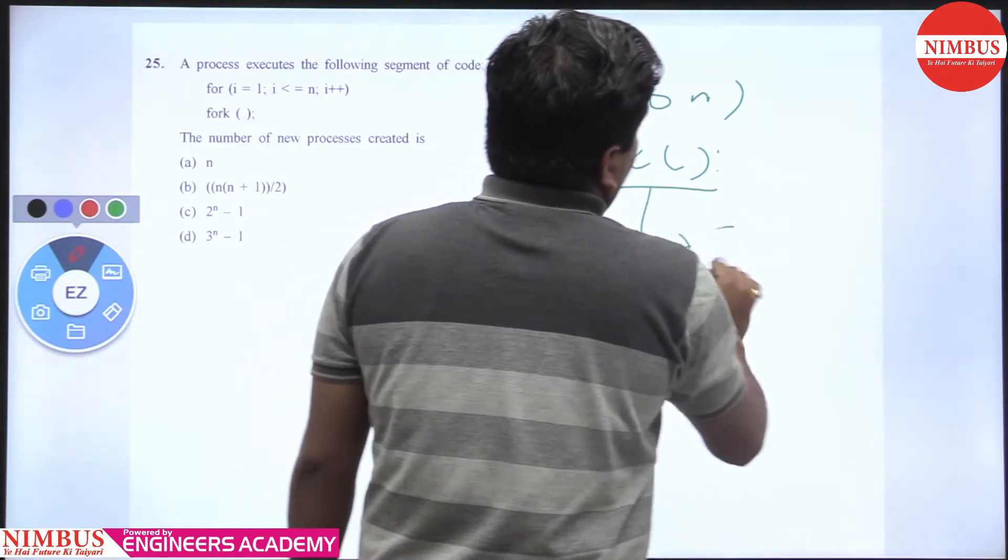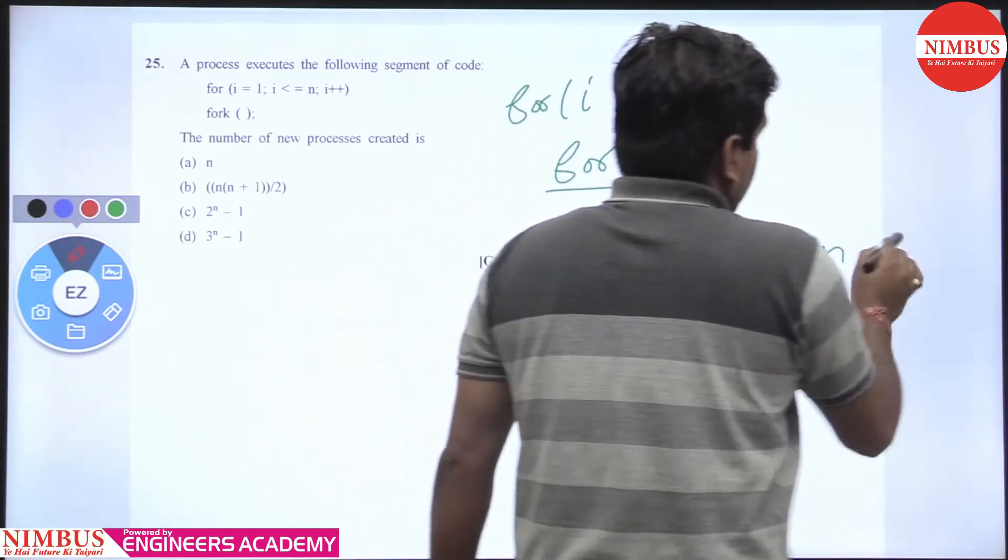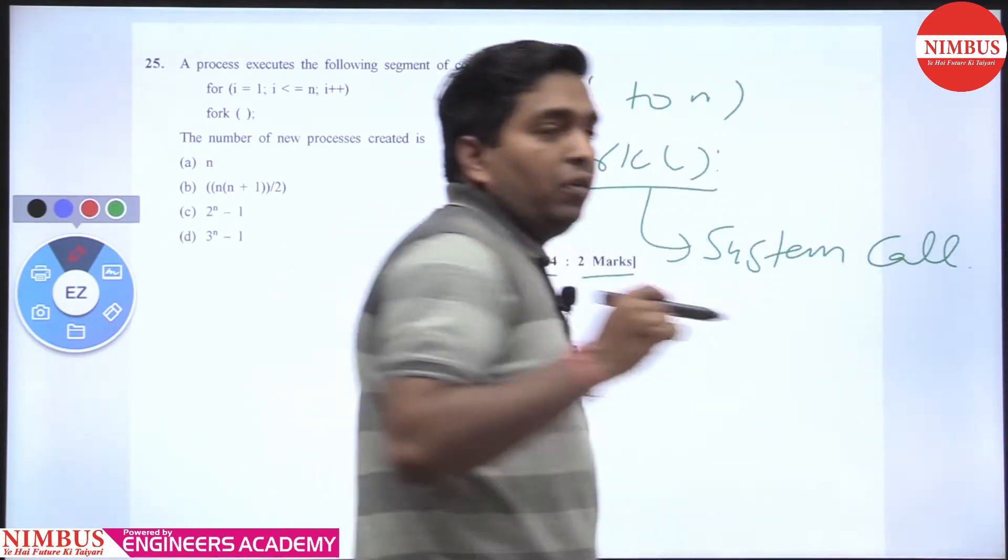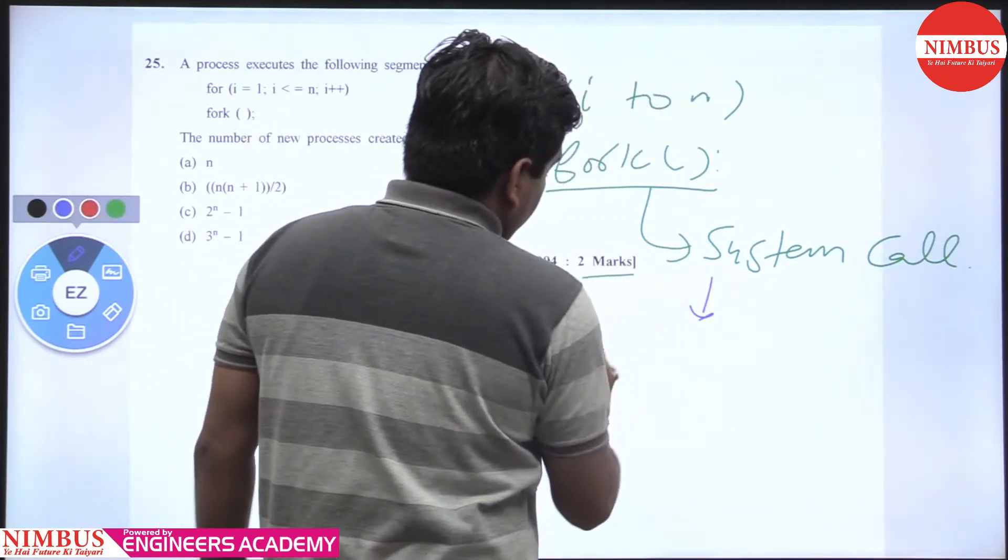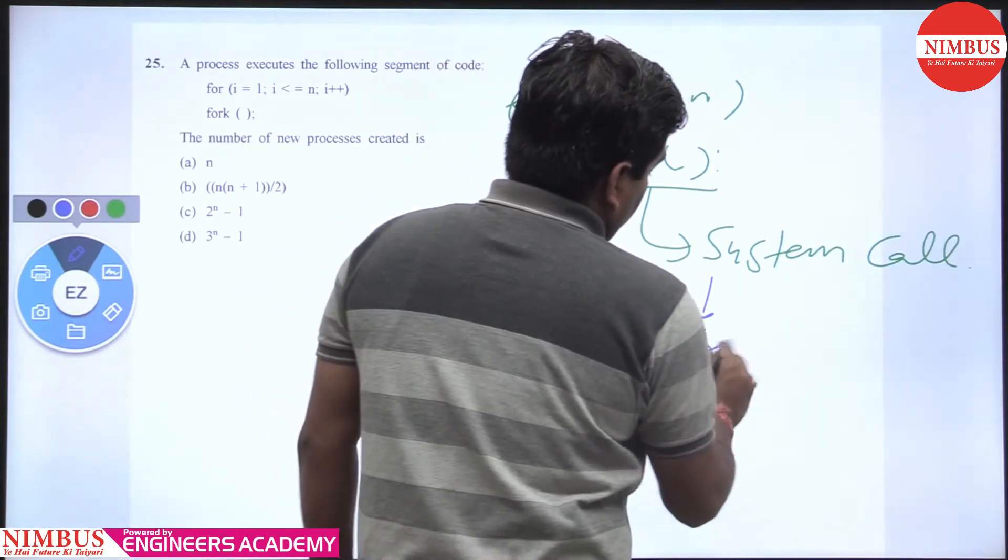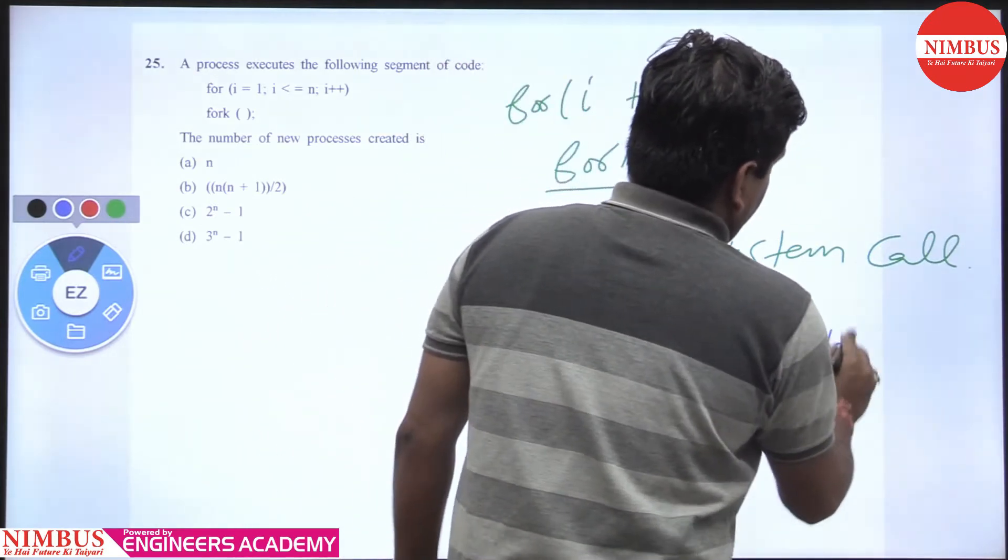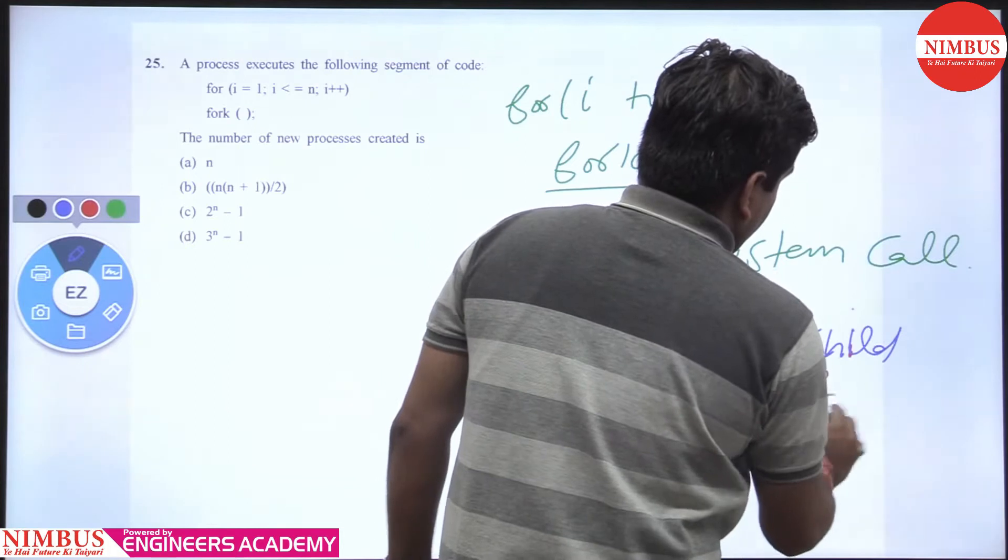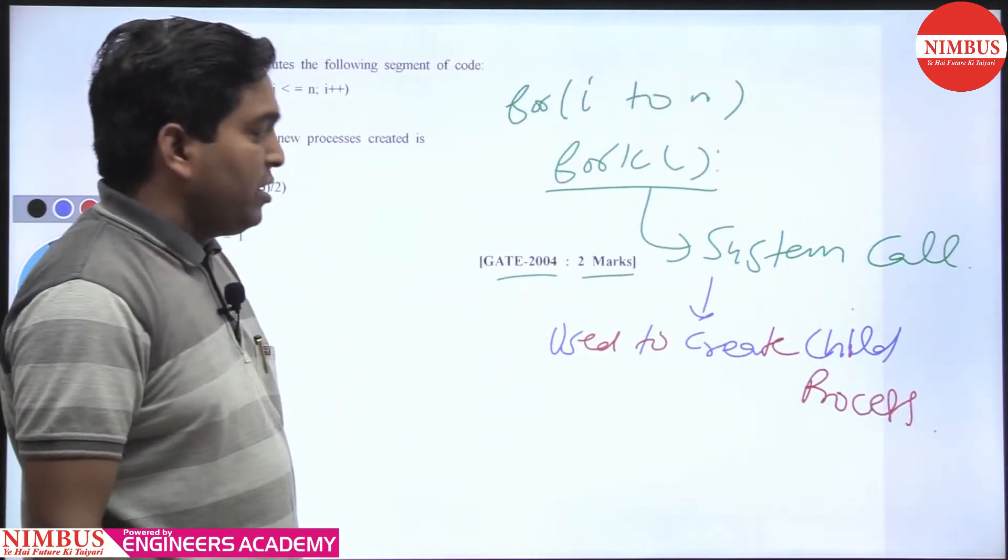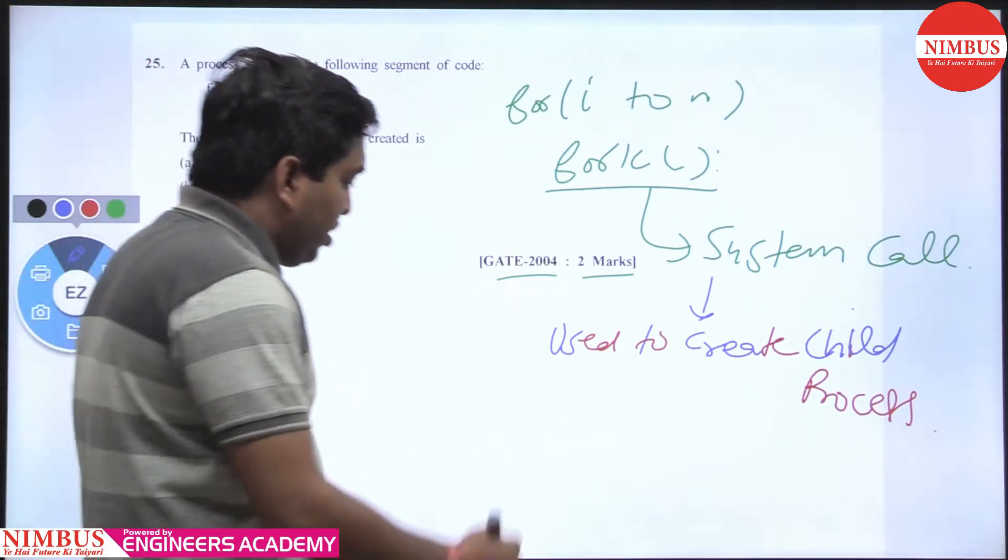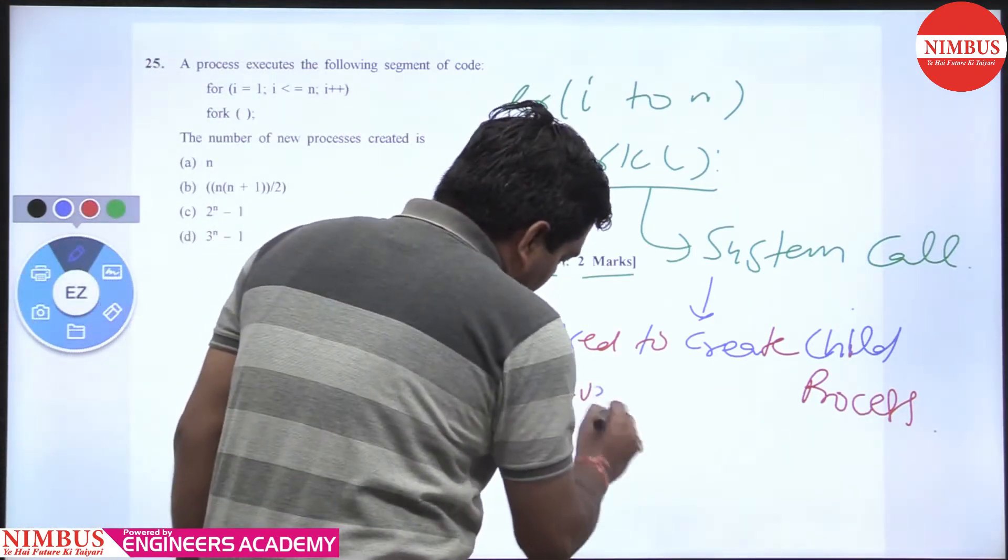Fork is a system call which is used to create a child process. Fork returns three values: either positive, negative, or zero.